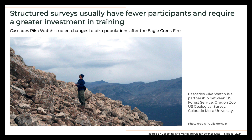One example is Cascades Pica Watch, a partnership between the U.S. Forest Service and the Oregon Zoo, which from 2018 to 2021 gathered data needed to understand changes to pika populations and distributions in the Columbia River Gorge related to impacts from a large forest fire known as the Eagle Creek Fire. Volunteers were trained to walk transects on talus slopes, to count pikas, to identify signs of burn damage, and to count the most common plants. The volunteers were required to undergo extensive in-person training and multiple group excursions before conducting surveys in small groups.